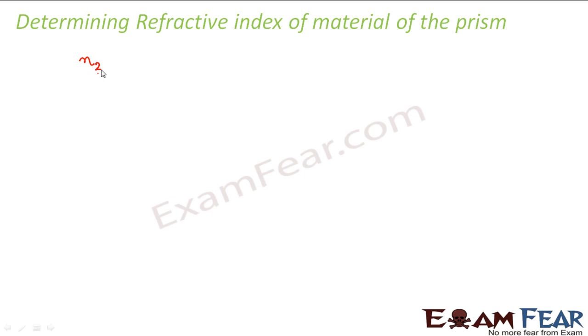Now we know that refractive index of any medium 2 with respect to 1 is equal to refractive index of 2 divided by refractive index of 1. Now from Snell's law we know that this is equal to sin i by sin r. Now in case of a prism also,